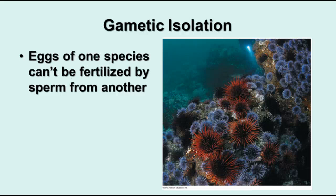Gametic isolation is when the eggs of one species can't be fertilized by sperm from another. You often see this in sea creatures — here are two different kinds of sea anemones that mate by shedding sperm into the water, which travels until it contacts another anemone of the same type and fertilizes its eggs. If it comes into contact with eggs of a different species, they can't be fertilized. All of these isolating mechanisms can over time lead to speciation — the development of a new species.